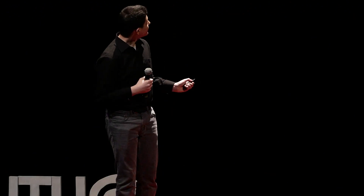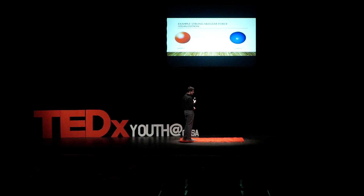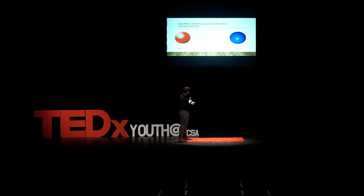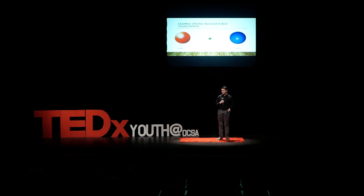Every force has something called a force carrier, and every force is theorized to have one. For example, take the strong nuclear force. It affects the attraction between quarks. So quark number one and quark number two affect each other through the strong nuclear force via the gluon, which goes between them and transfers the information of the force — basically telling them what they're supposed to be doing.